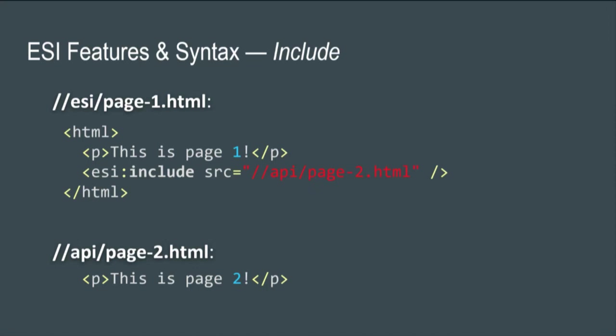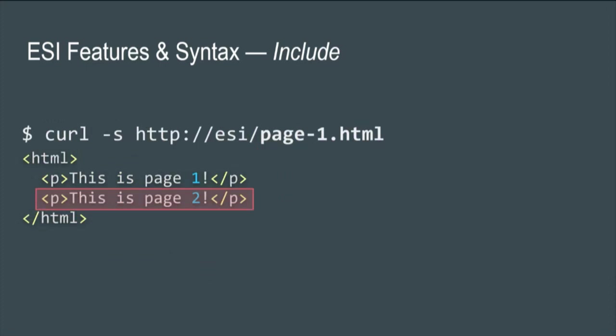Our first feature is ESI includes, which are, in my opinion, the most relevant ESI tags. So you have two files: page1.html on the ESI server and page2 on another server called API. Page1 has an ESI include tag pointing to page2. Two things can happen: a cache hit or a cache miss. On a cache hit, the ESI engine replaces the tag with the content of page2. If the cache entry is invalidated, the ESI engine does a side request to fetch that file. Whatever happens, the end user gets the content filled in by the engine.